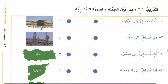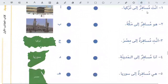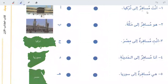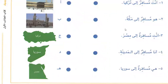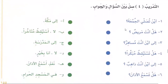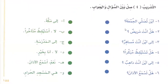Exercise three — sil bainal jumlati wassurutil munasibha — join the sentence and the appropriate picture. You are traveling to Turkey, so you will join it with Turkey. He is traveling to Mecca. In this way you will join them. Exercise four — sil bainal jawab — join the question and the answer.